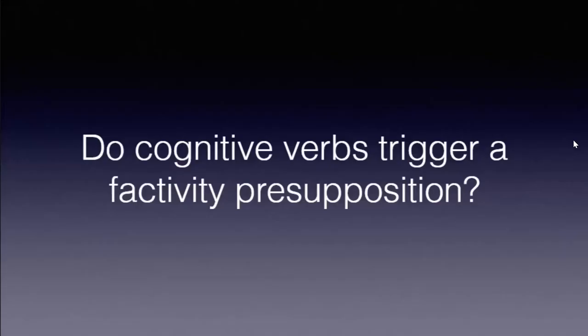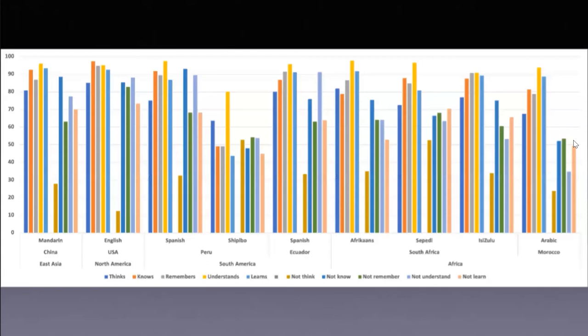We're still waiting for a few more data sets from Japan, Korea, and India for this study. Do cognitive verbs trigger factivity presuppositions? The data is presented the same way: on the x-axis is the country, on the y-axis is the proportion choosing the red box. You have the affirmative versus negated conditions for think, know, remember, understand, and learn. A factivity presupposition is inferred when the three other cognitive verbs show the same pattern as 'know,' in contrast to 'think.'